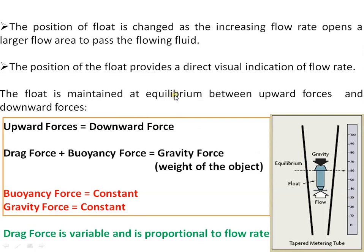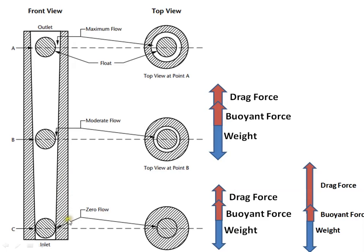At a particular position of the float it reaches equilibrium, where the upward forces equal the downward forces. The upward forces are two: drag force and buoyancy force. The downward force is gravity. Buoyancy force and gravity force are constant; the variable parameter is the drag force, which is proportional to the velocity of the flowing fluid. At the equilibrium position the area between the float and the tapered glass tube produces a balance of all forces.